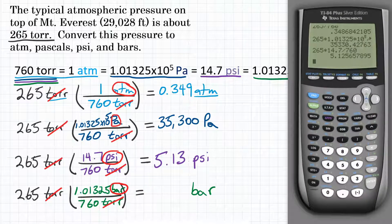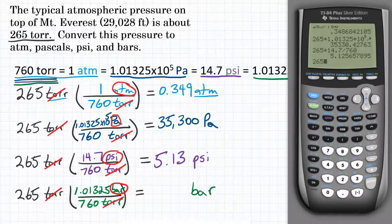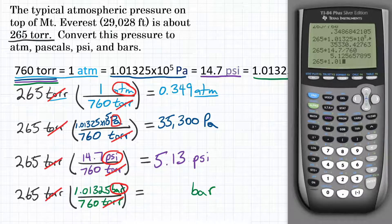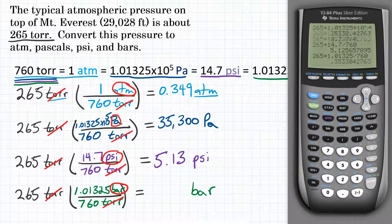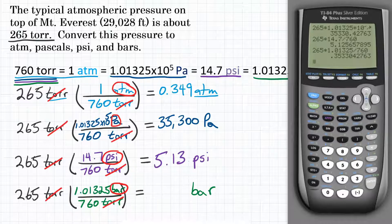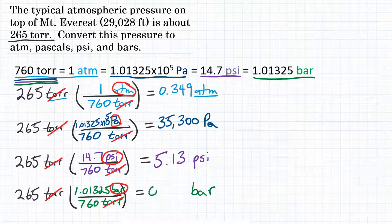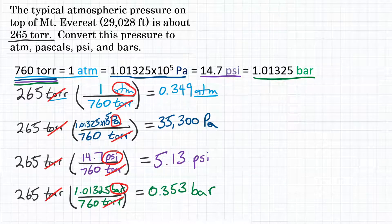So if we get our calculator, for the last time, we are starting with 265. We will multiply by 1.01325, and we will divide by 760. Hit equals. And let's round this to, again, three significant figures. We would get 0.353. So 0.353. Alright, so final answer.